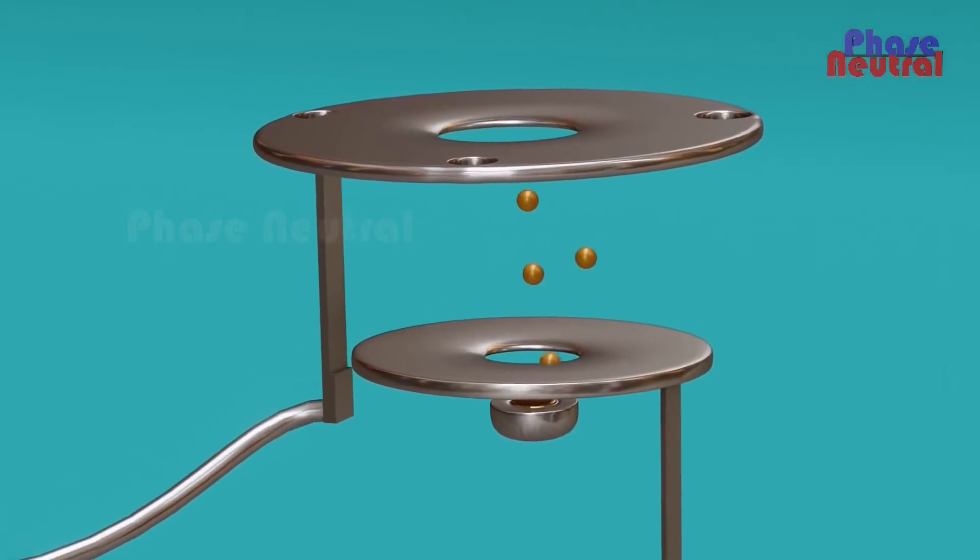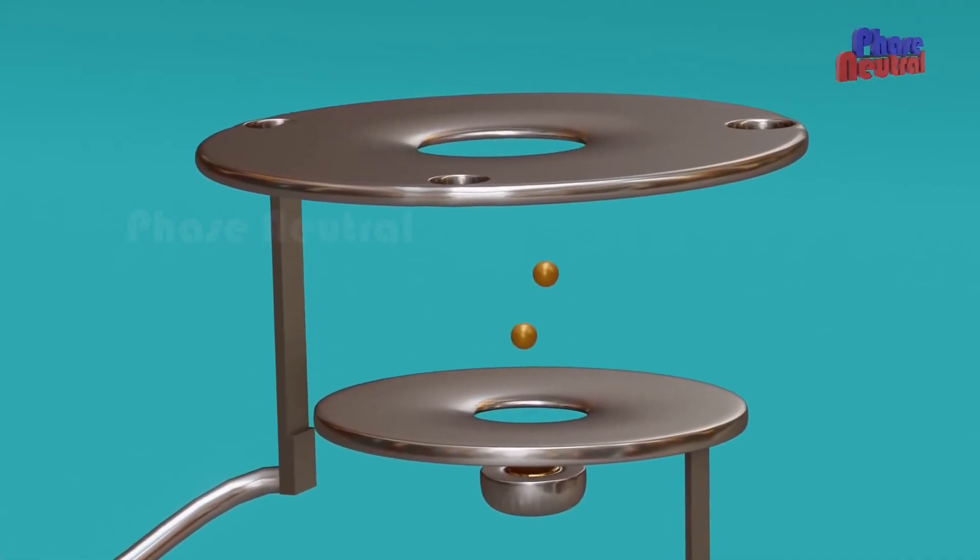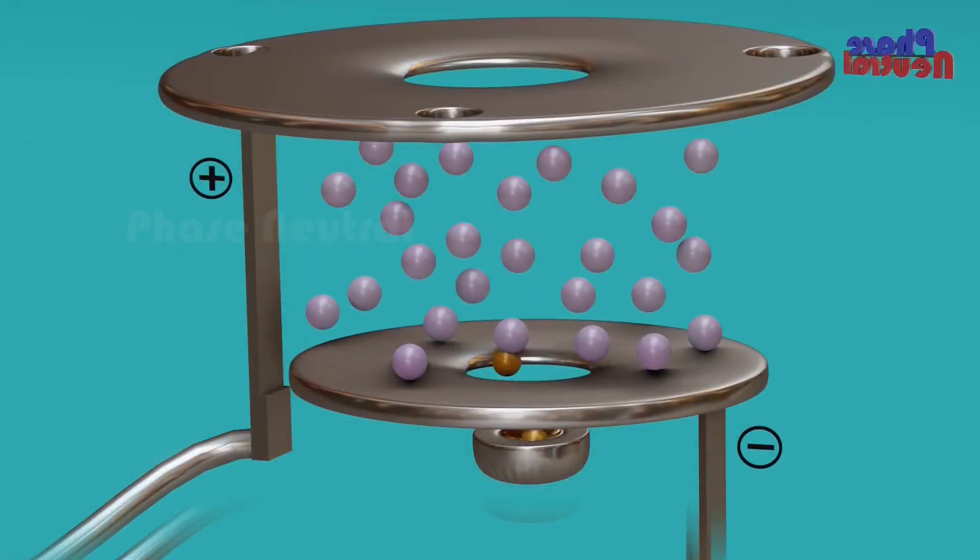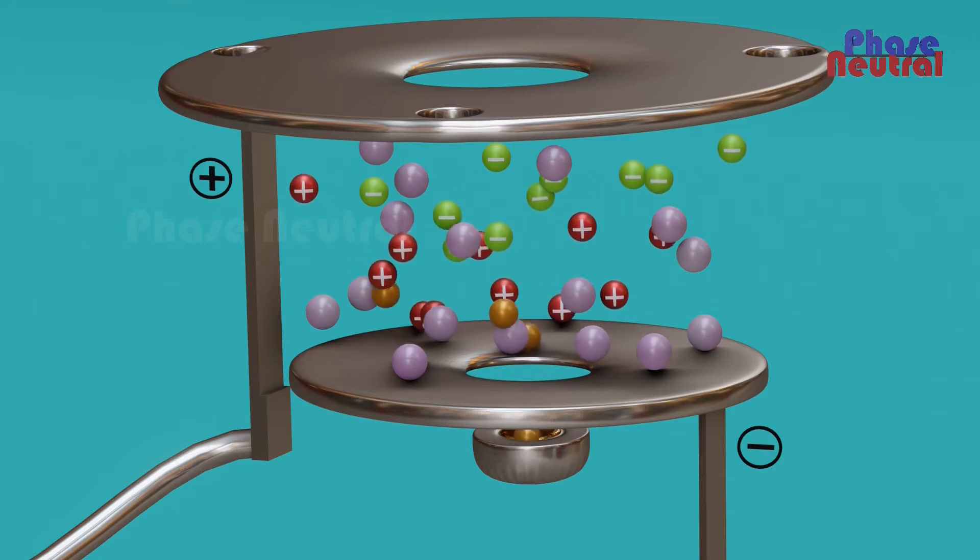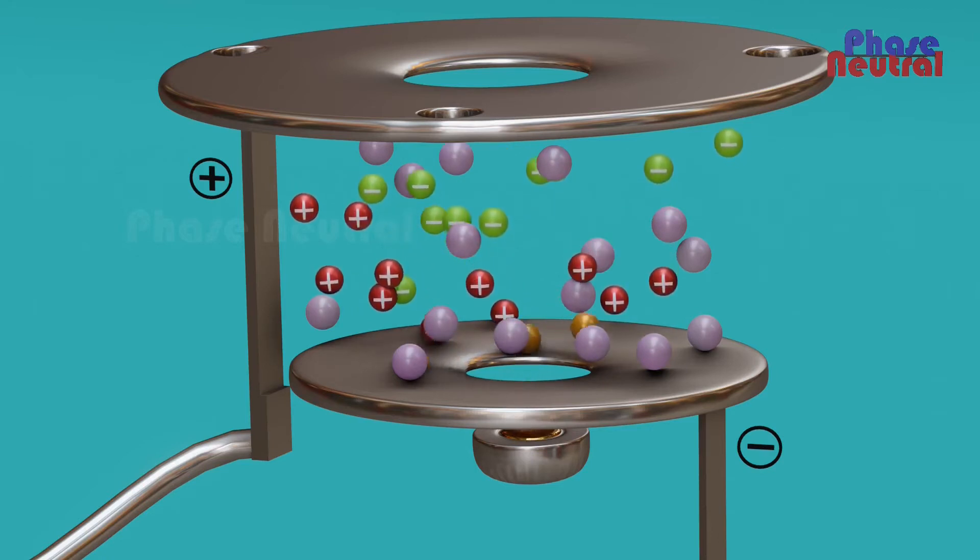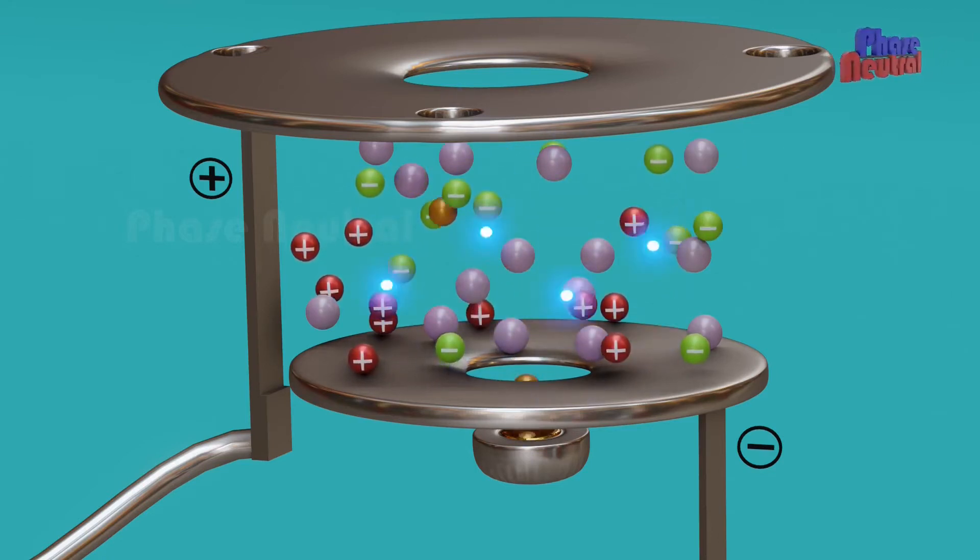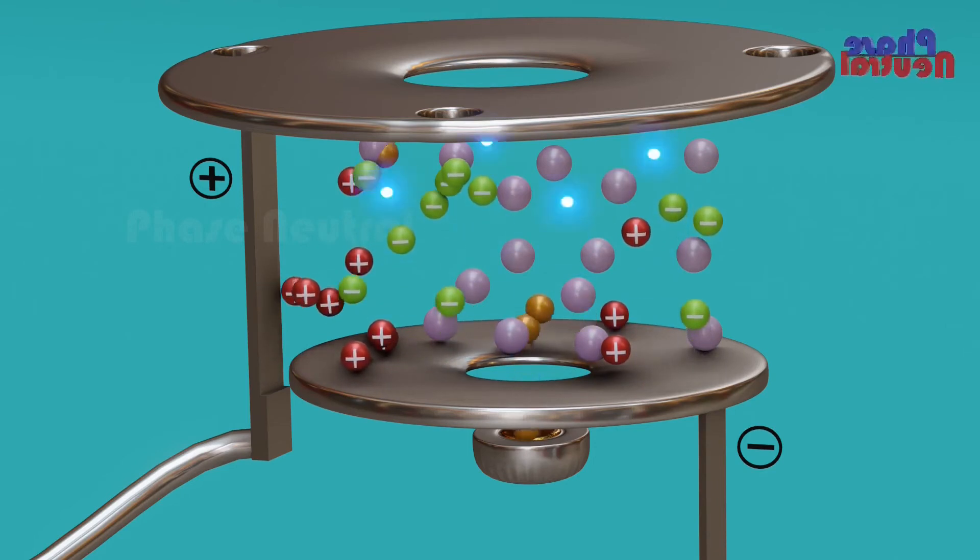Americium-241 constantly releases alpha particles that knock out the electrons from the surrounding atoms in the air, making positively and negatively charged ions. The positively charged ions are attracted to the negative plate, and the negatively charged ions are attracted to the positive plate. This forms a small continuous electric current flow between these plates.